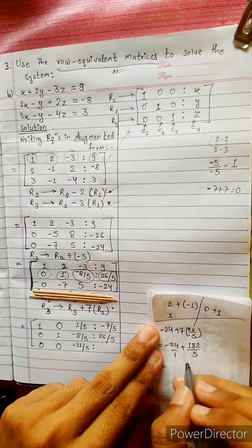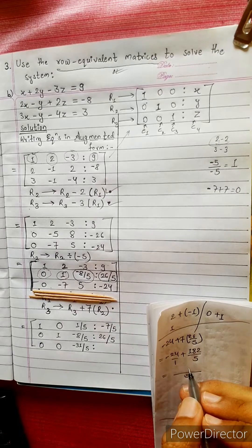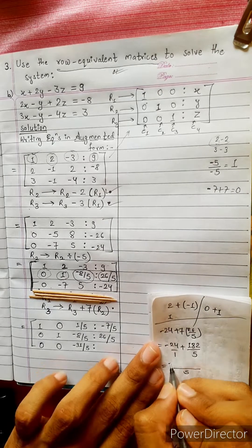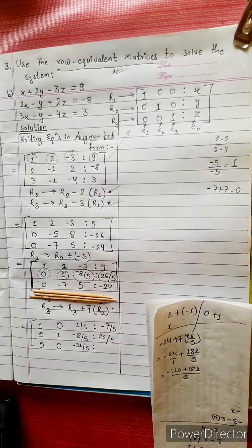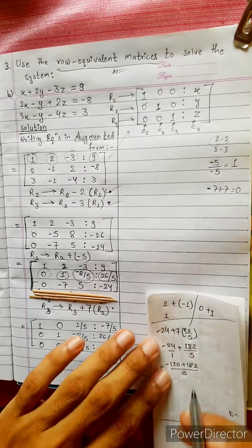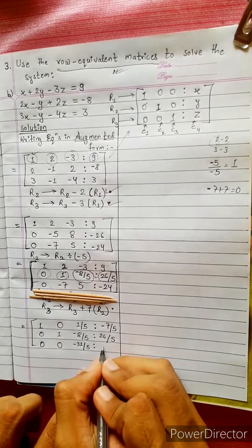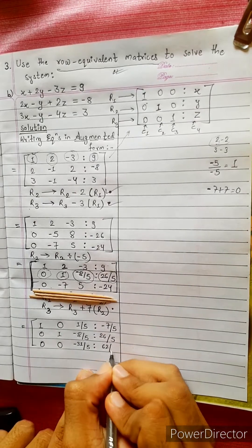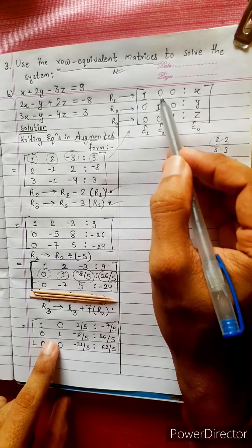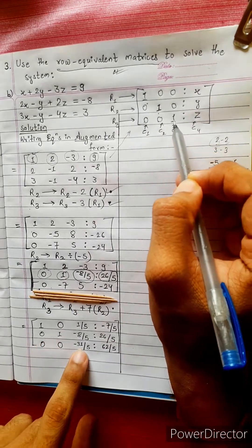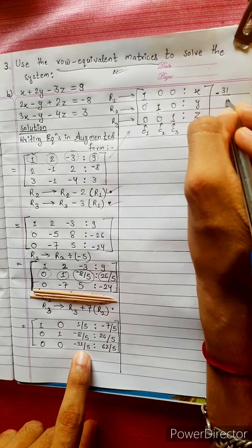This is 182. LCM is 24 into 5. 24 into 5 is 120. Plus 182. Plus 62 divided by 5. 62 divided by 5. How do we do this? 1 0 0. 0 1 0 0. Minus 31 divided by 5.